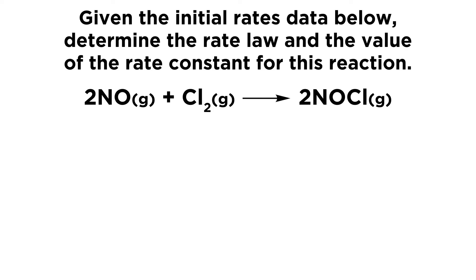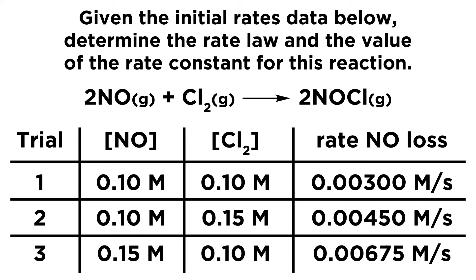So the reaction we are looking at is 2NO plus Cl2 yields 2NOCl. And here is the initial rates data that we are going to use to find the rate law and the rate constant. So if this seems confusing, go ahead and check out my tutorial on kinetics. And when you're ready, give this a try.